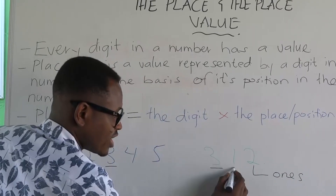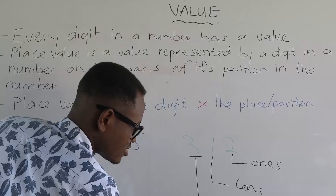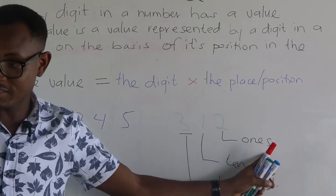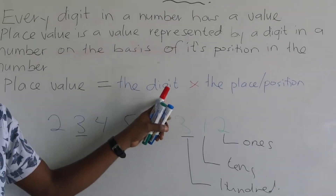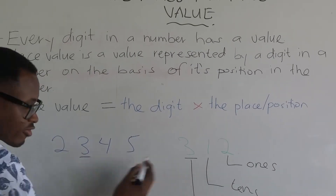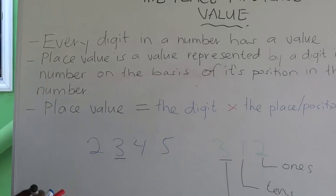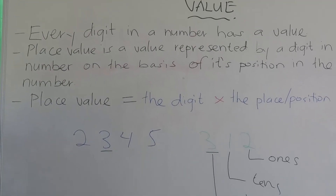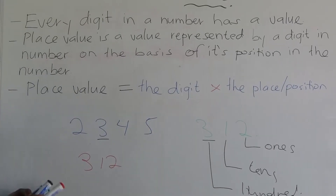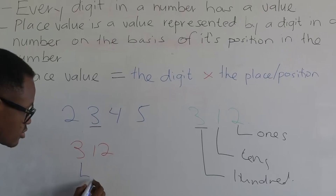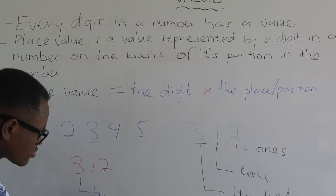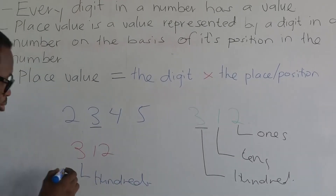What is the place of this? Ones. What is the place of this? Tens. What is the place of this? Hundreds. Good, so you've been able to identify the place. Now we are seeing that place value is the digit multiplied by the place or the position. Let's take three, for instance, in this number. The place of three is hundreds.